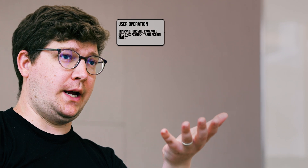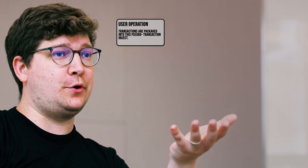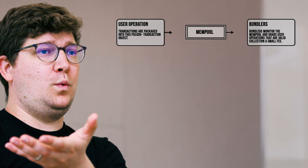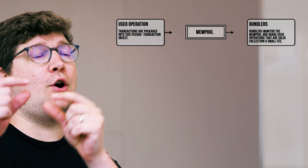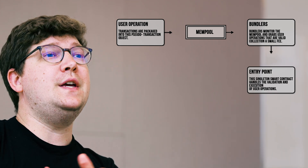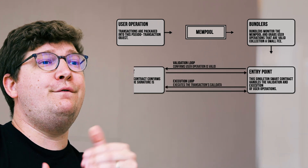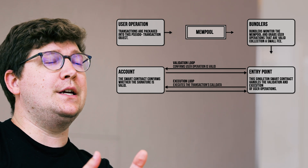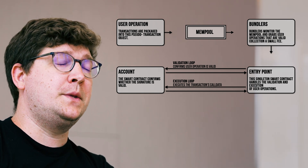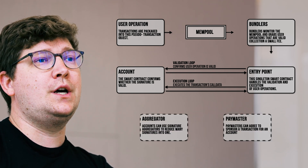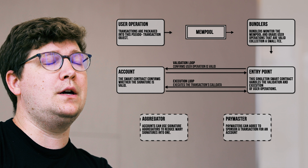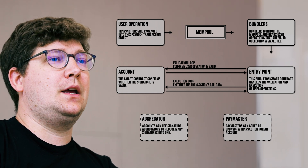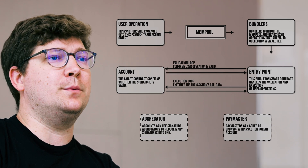When a user goes to do an action on chain, a user operation is created, the user signs it, and it gets sent to a bundler. The bundler packages that user operation with other relevant user operations into a bundle, which is then submitted on chain to the entry point contract. The entry point then handles the verification and execution of these user operations in collaboration with the smart accounts themselves. Additionally, paymasters can sponsor gas fees for the smart account and aggregators can reduce gas costs for certain types of cryptographic signatures.